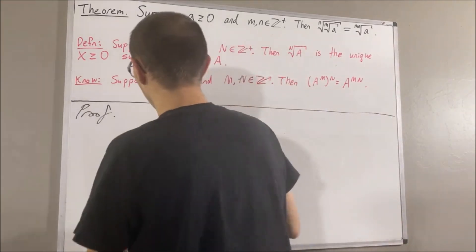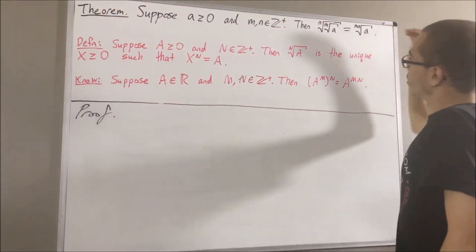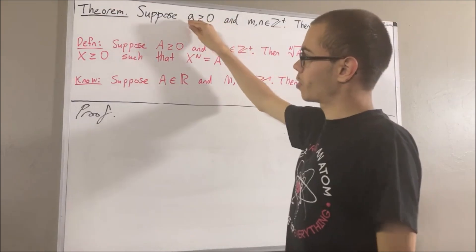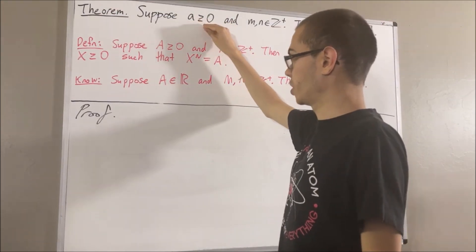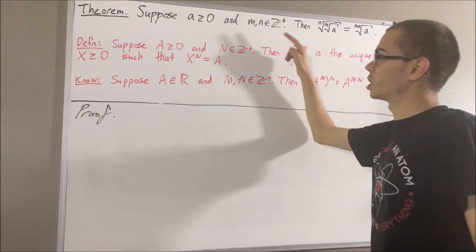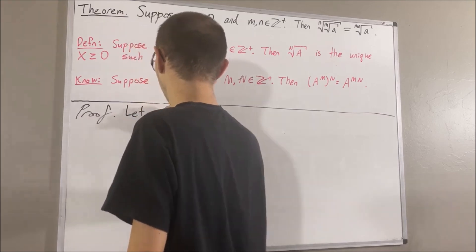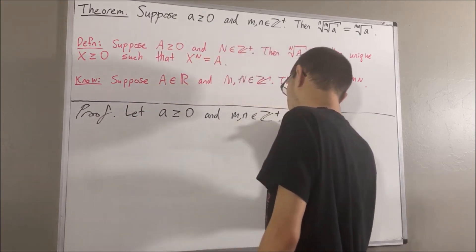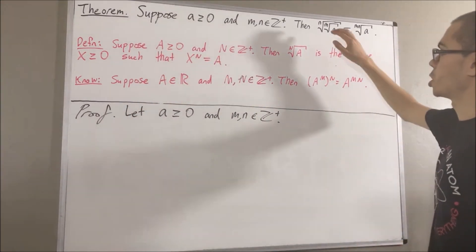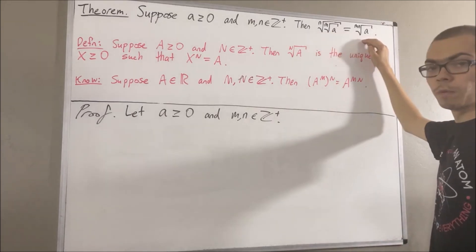So now let's get into proving this theorem. To start out the proof, let's give ourselves a real number a greater than or equal to zero, and two positive integers m and n. The whole goal from here is to show that these two expressions are equal.